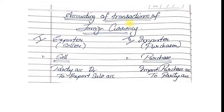For accounting of transactions of foreign currency, the sum can be from either the exporter's point of view or the importer's point of view. If you are an exporter you have three different journal entries, and if you are an importer you have three different journal entries. The very first entry: if you are an exporter you always sell on credit — entry will be Party Account Debit to Export Sale. If you are a purchaser, Import Purchase Account Debit to Party. It's just a reverse entry.